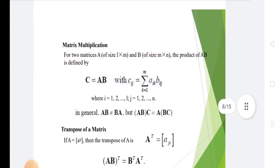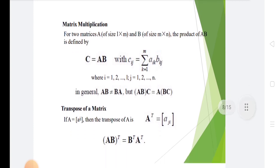In matrix multiplication, for two matrices A of size L into M, B of size M into N, the product AB is defined as C equals A into B. In general, AB is not equal to BA, but AB into C equals A into BC.